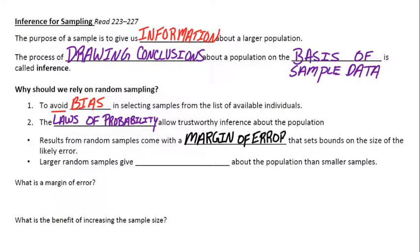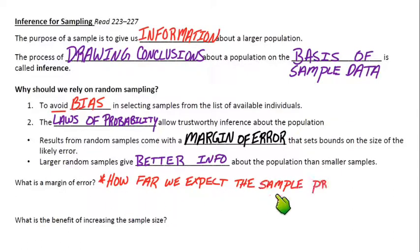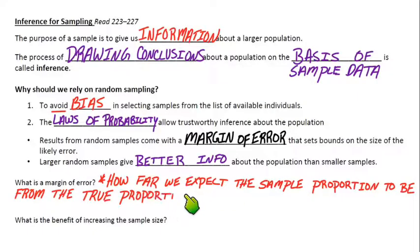The results from random samples come with a margin of error that sets bounds on the size of the likely error. When we talk about sample data we can trust, it's like we have this range of values. That's our margin of error. The last note here is larger random samples give better info, in general, about the population than smaller samples do. Let's focus on this margin of error thing. So, what is a margin of error? It doesn't mean error like a mistake. Margin of error just tells us how far we expect the sample proportion to be from the true proportion at most.